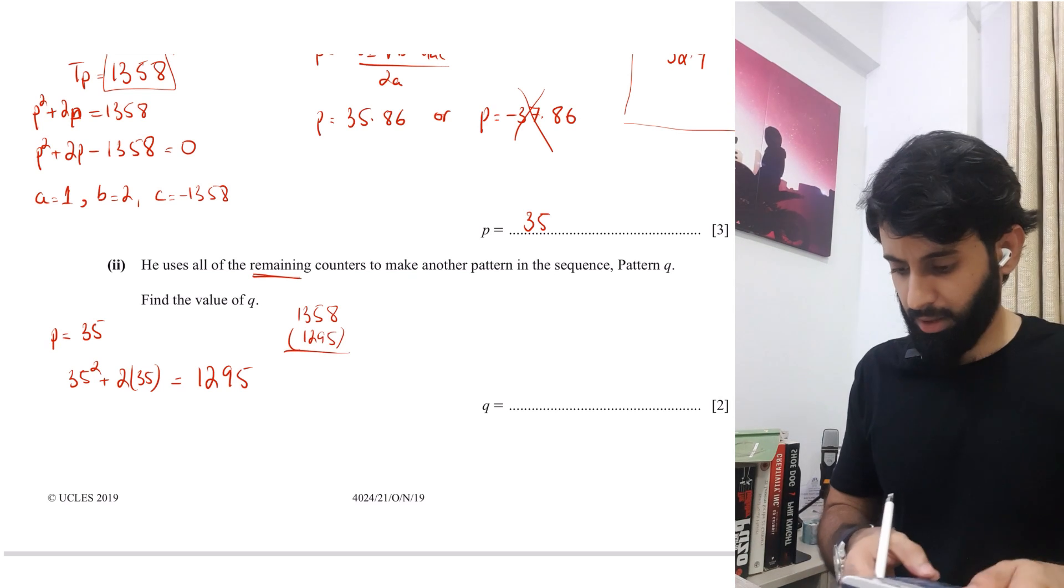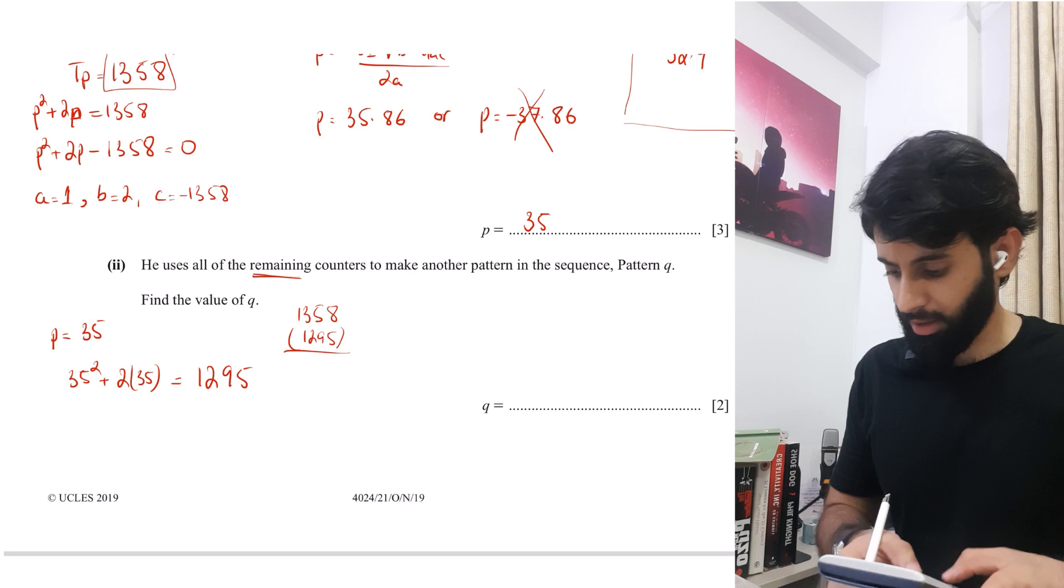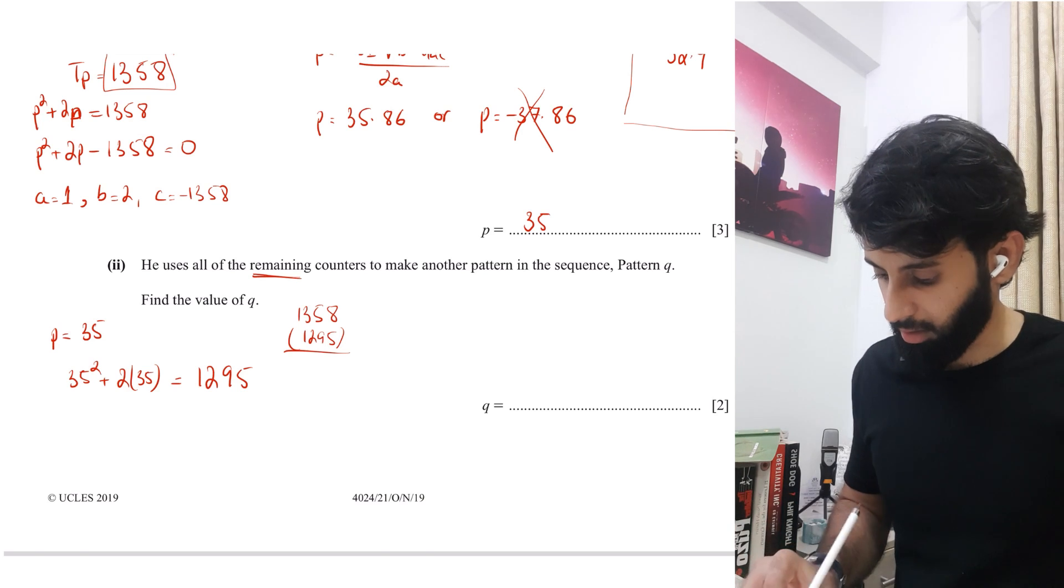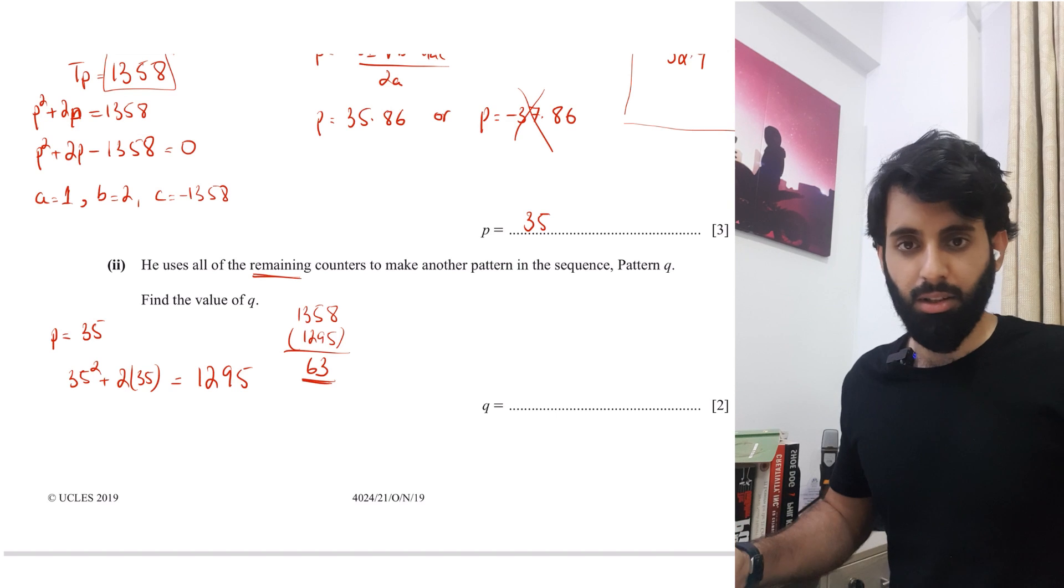I think it's going to be 63, but let's find out anyway. Oops, not divide, subtract 63. Yeah. So that means you're left with 63 counters.